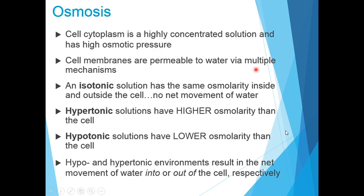Osmosis — water movement across a semi-permeable membrane driven by differences in osmotic pressure — is an important factor in the life of most cells. The cytoplasm in a cell is a highly concentrated solution with high osmotic pressure. An isotonic solution has the same osmolarity inside and outside the cell, so there is no net movement of water. Hypertonic solutions have higher osmolarity than the cell, and hypotonic solutions have lower osmolarity, resulting in net movement of water into or out of the cell, respectively.